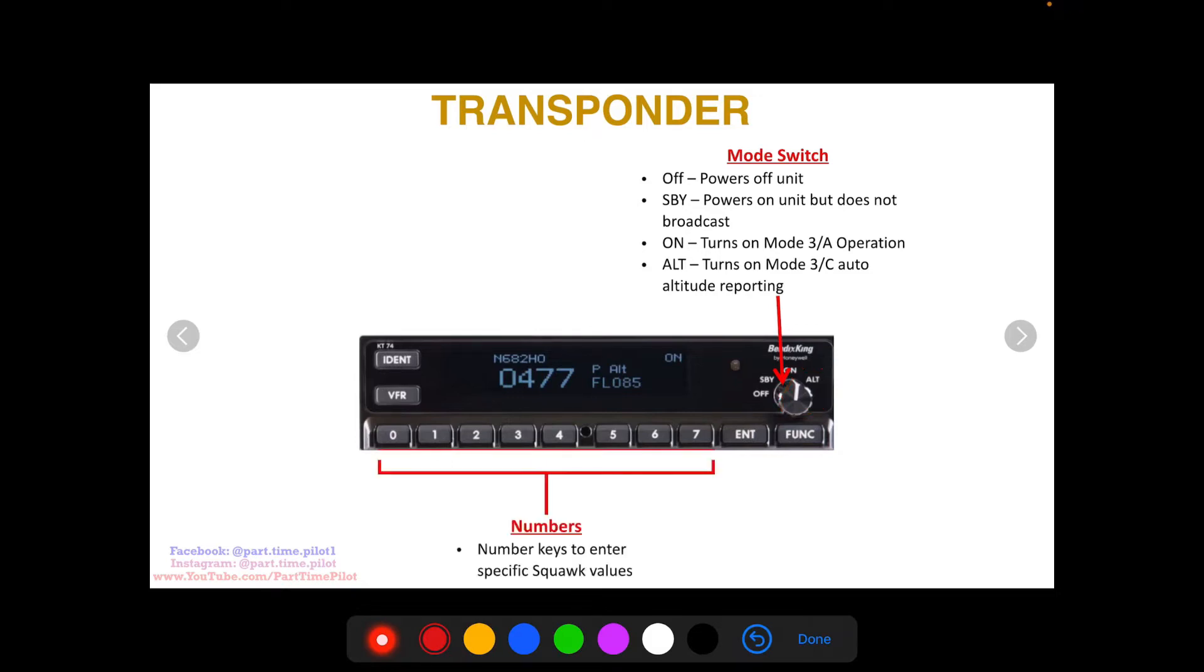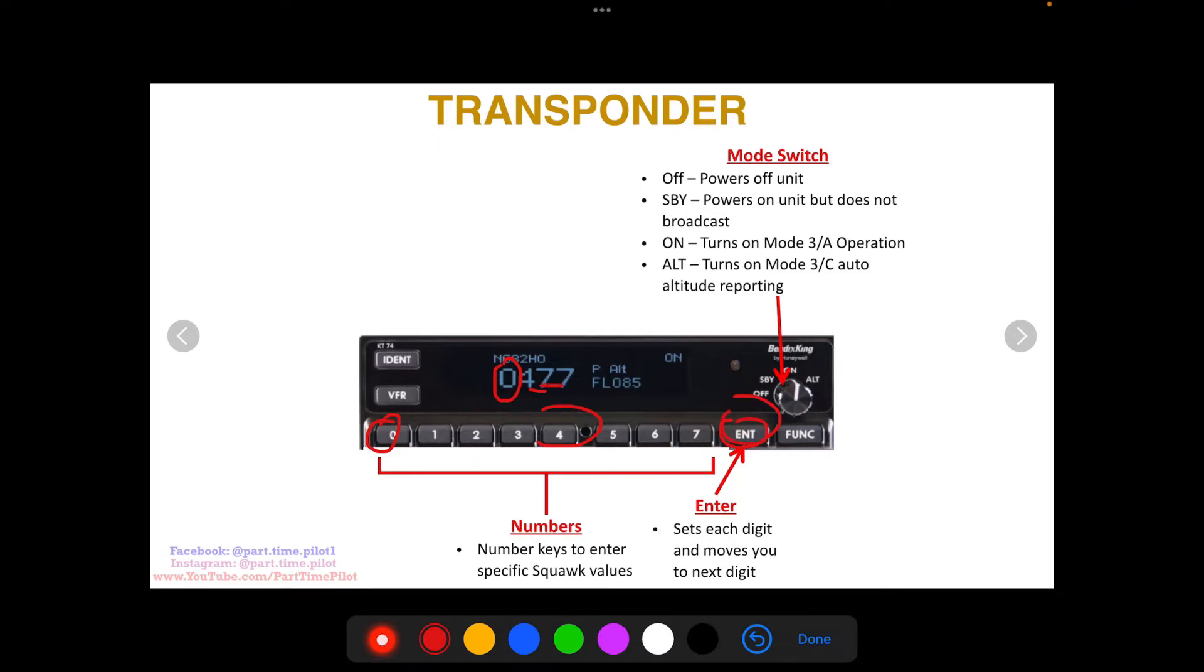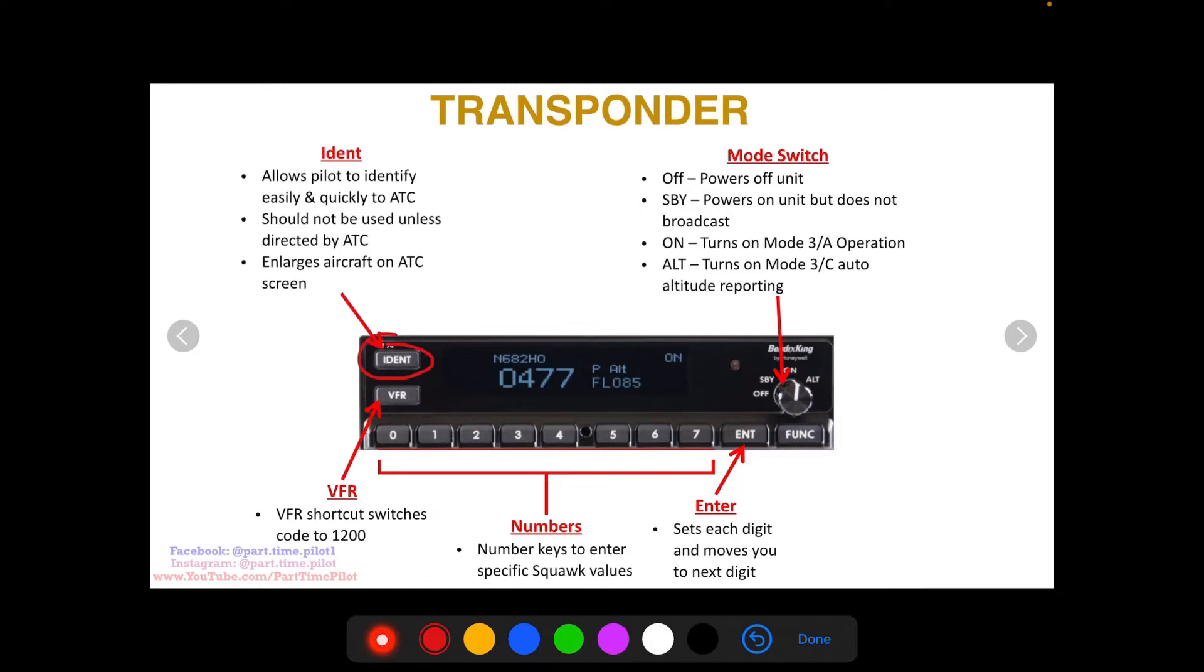Then you have the numbers which you use to change your squawk code. You press the first digit and then press enter, and it goes to the next digit. You have a VFR quick button which quickly changes your squawk code to 1200.